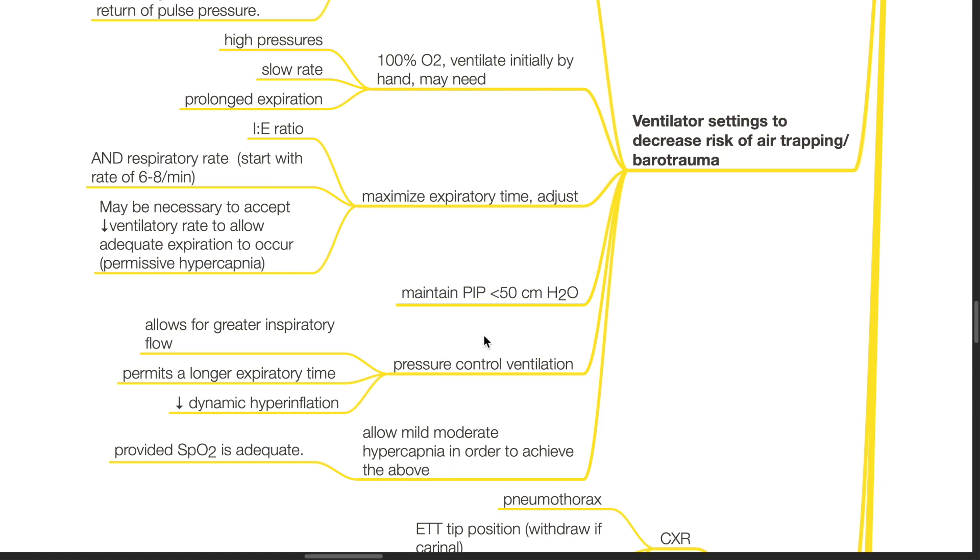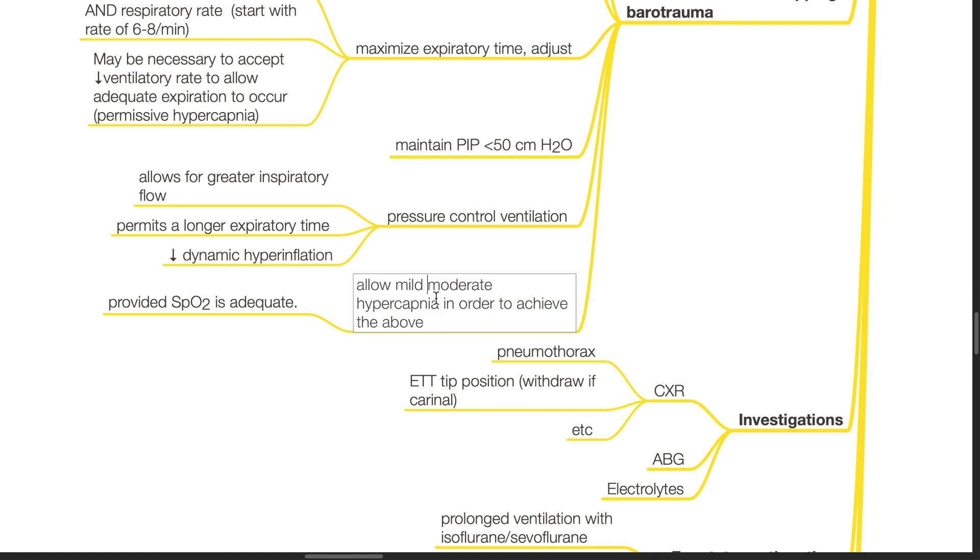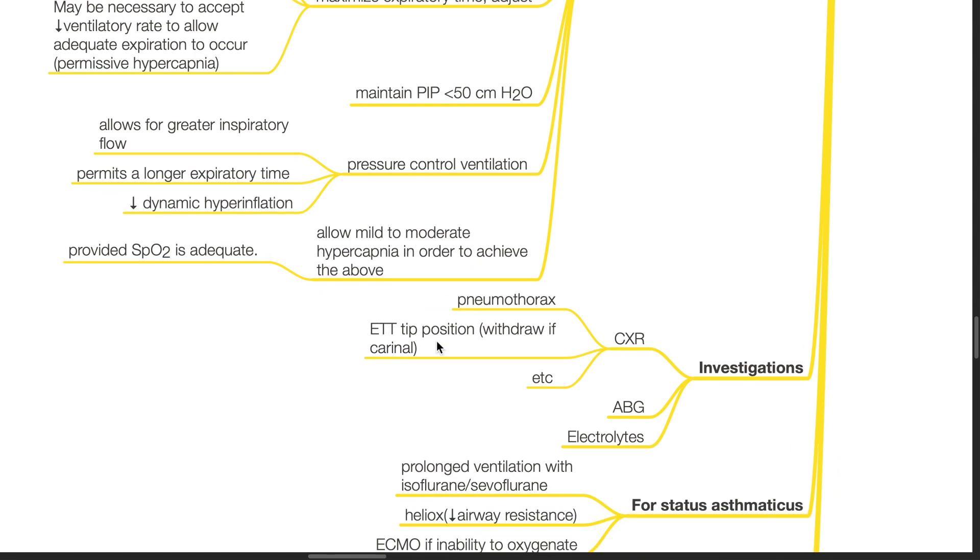Maintain peak inspiratory pressure less than 50 cmH2O. Pressure controlled ventilation allows for greater inspiratory flow, permits a longer expiratory time and decreases dynamic hyperinflation. Allow mild to moderate hypercapnia in order to achieve the above provided SpO2 is adequate.